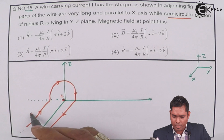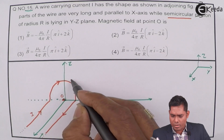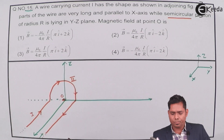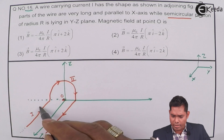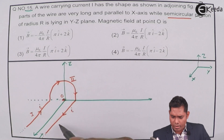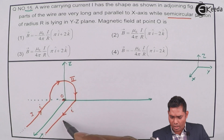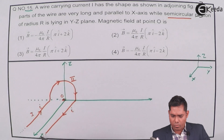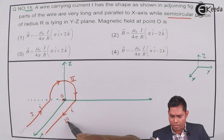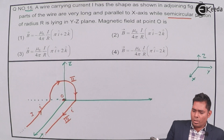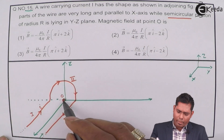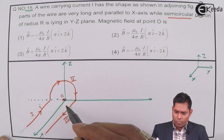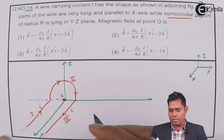The magnetic field at O is due to contributions from three segments of the wire. This is segment one — the first straight portion. This is segment two — the semicircular portion. And this portion, where the current is going away from the origin, is segment number three. All these segments will contribute to the magnetic field at point O by vector addition.